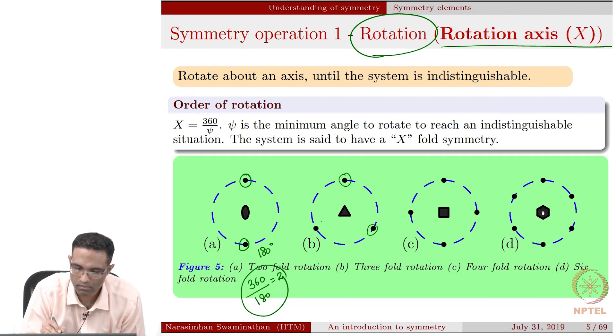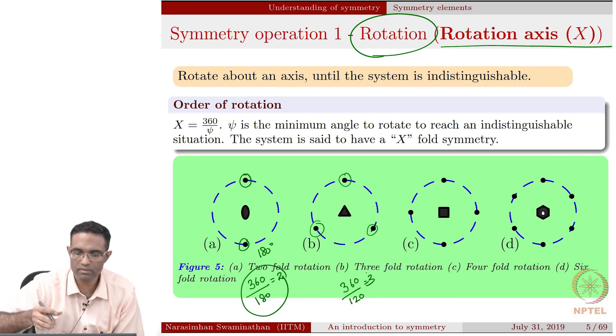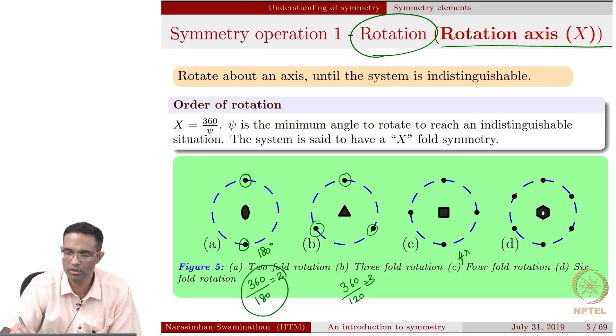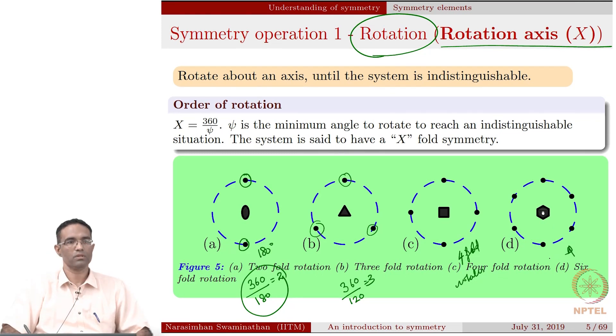Now, this object here possesses a three-fold rotation. If you rotate it by 120 degrees, the object appears indistinguishable. This one is a four-fold rotation and this one is a six-fold rotation. What is missing? Five-fold rotation is missing. What about seven-fold rotation, eight-fold rotation? So the question is, what happens to these rotations? Where are they? Why did I not talk about them?